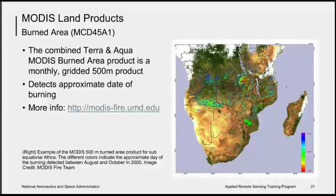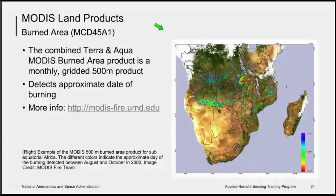The algorithm detects the approximate date of burning at 500 meters and maps the spatial extent of recent fires by analyzing daily surface reflectance and a model-based change detection algorithm to locate rapid changes on Earth's surface. The burned area image on the right shows sub-Saharan Africa for fires detected between August and October of 2000. The different colors indicate the approximate day of burning — blue for August, green for September, and red for October.